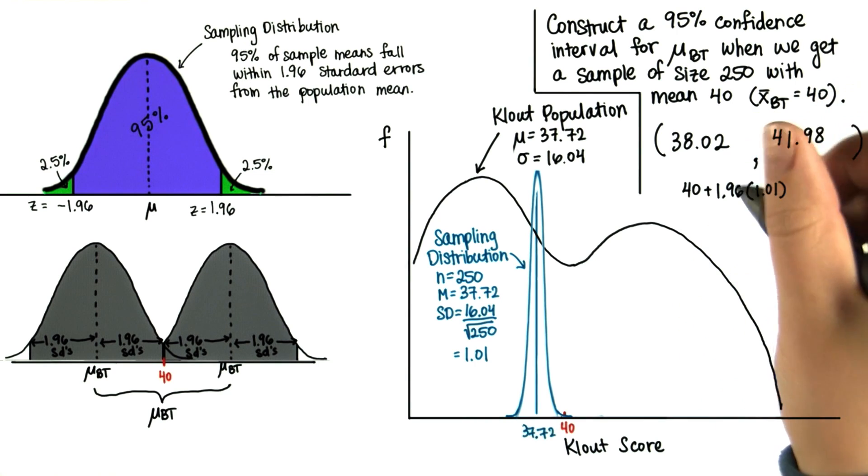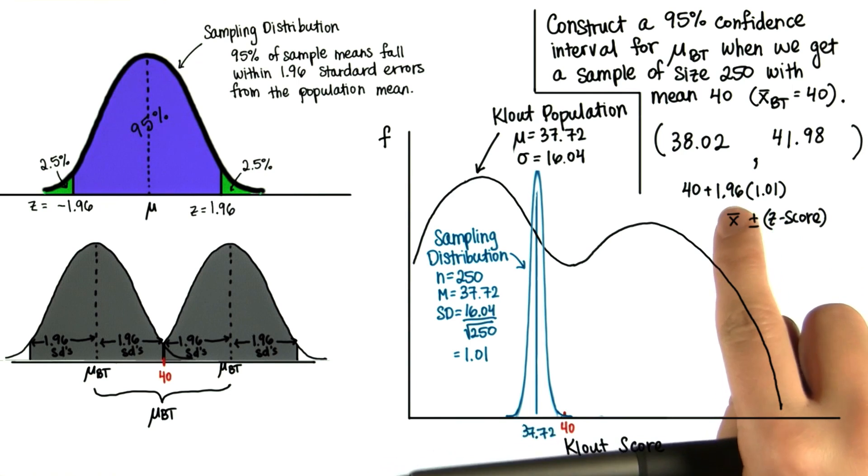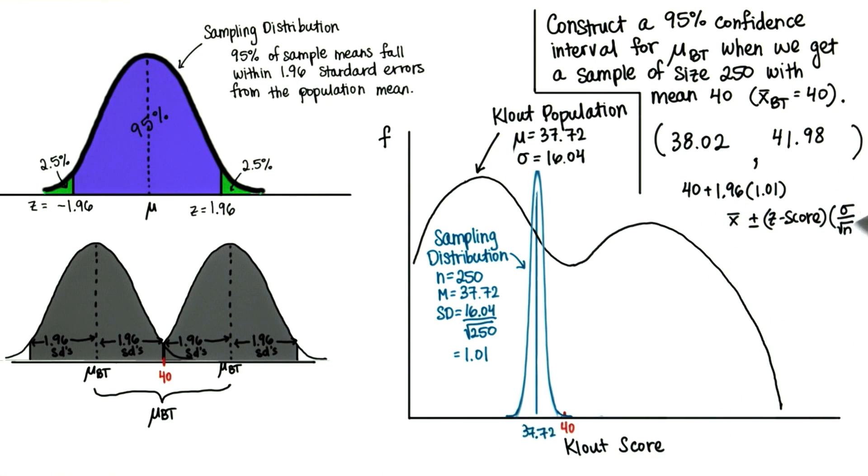It's pretty simple when we lay it out like this, just generically x bar plus or minus the z score, in this case 1.96 since we want a 95% confidence interval, times the standard deviation.